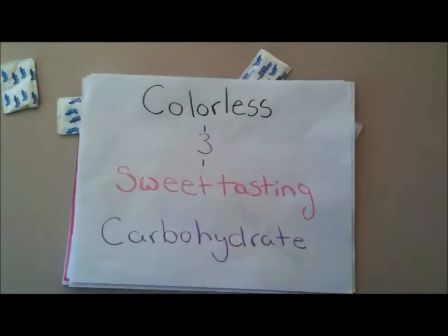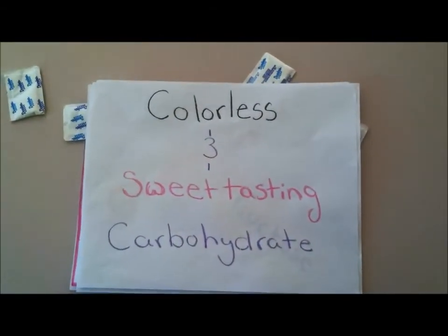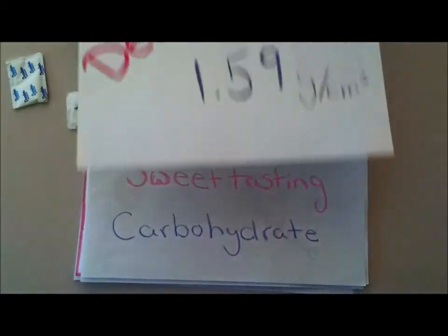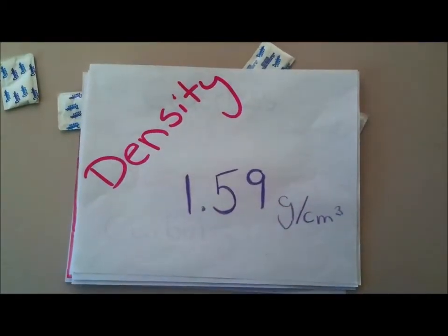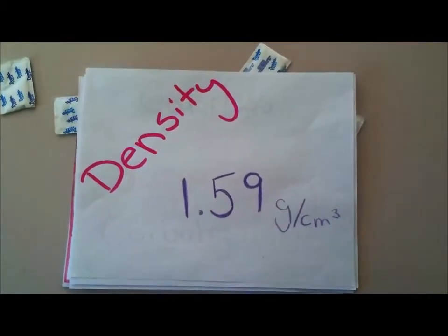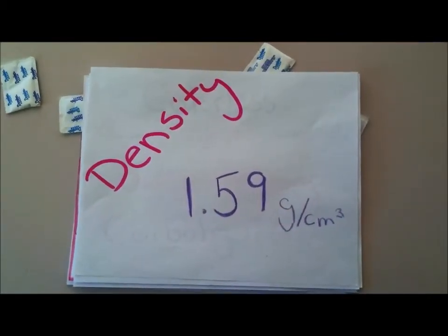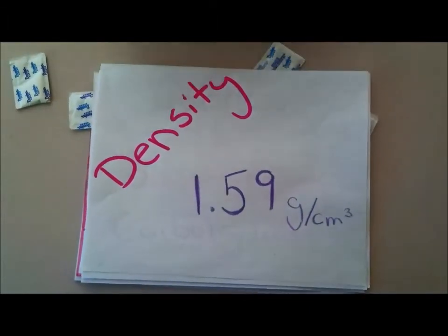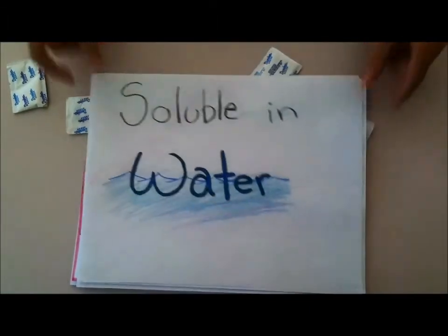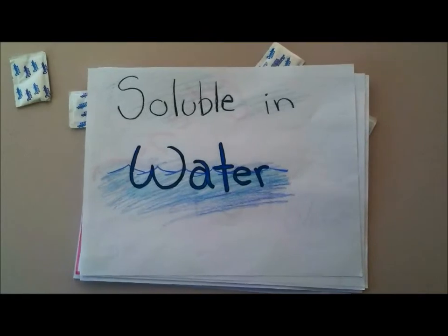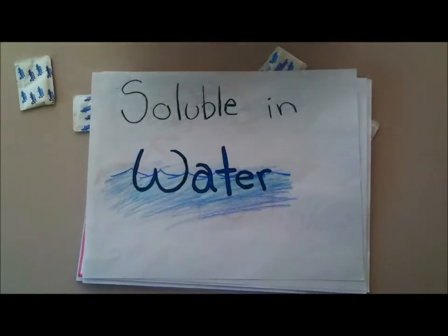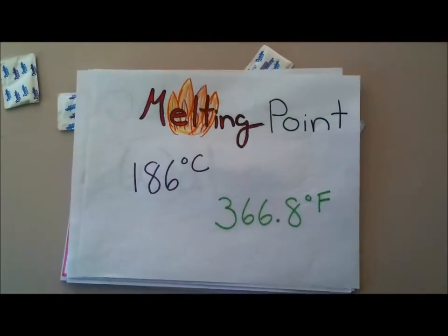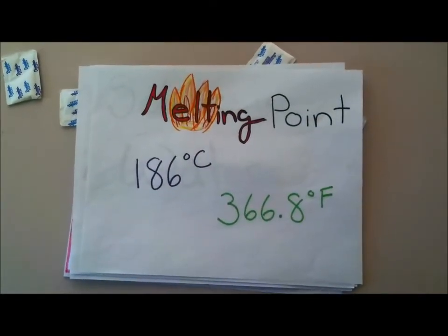Sugar is a colorless, sweet-tasting carbohydrate. The density of sugar is 1.59 grams per centimeter cubed. Sugar is soluble in water, and its melting point is 186 degrees Celsius.